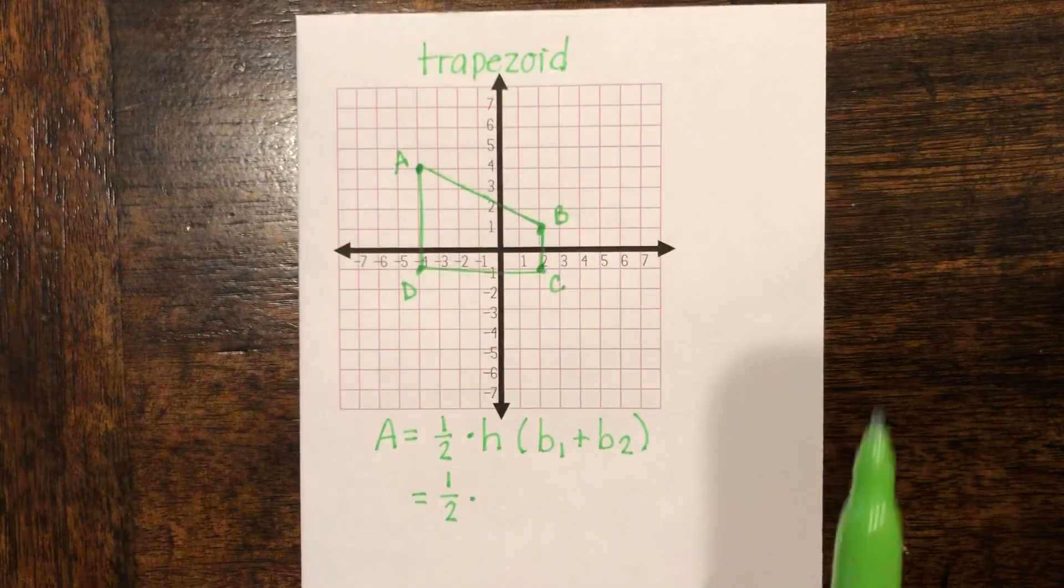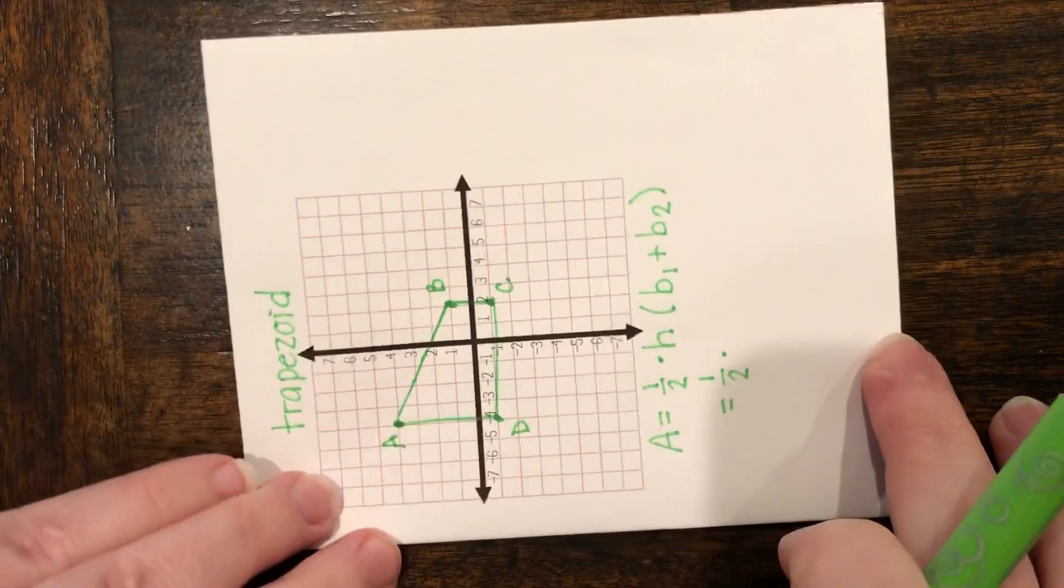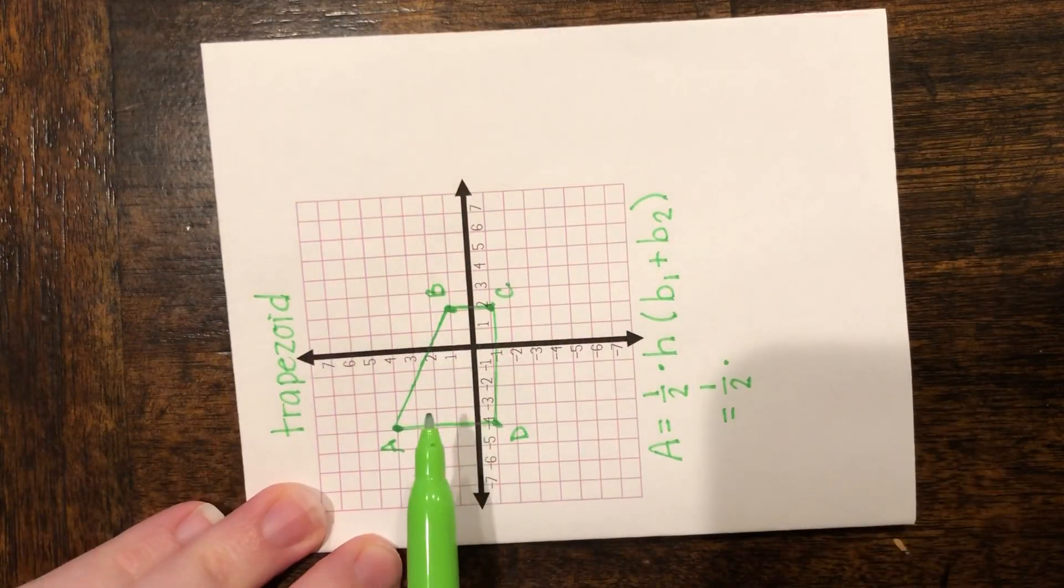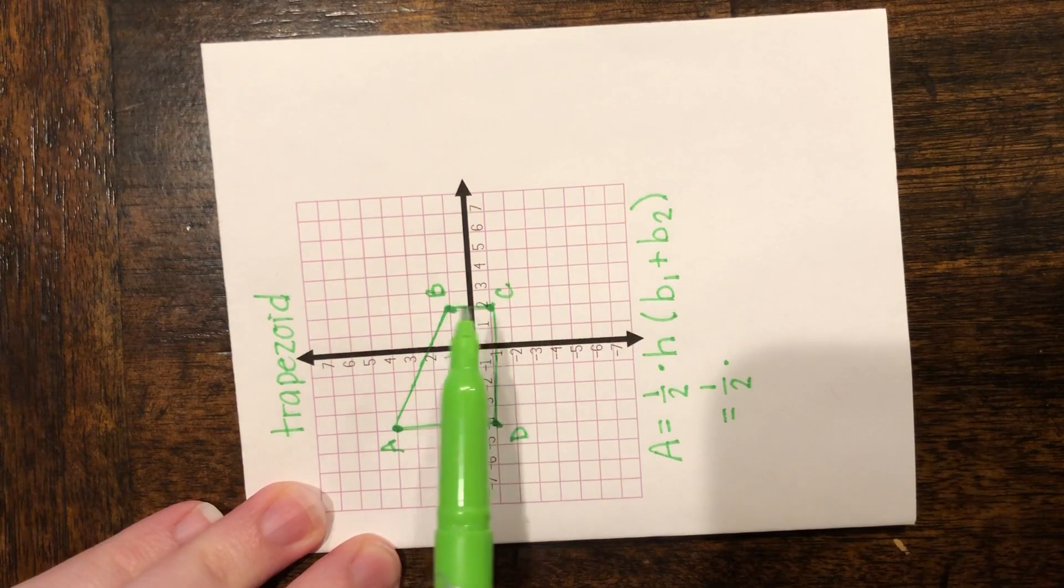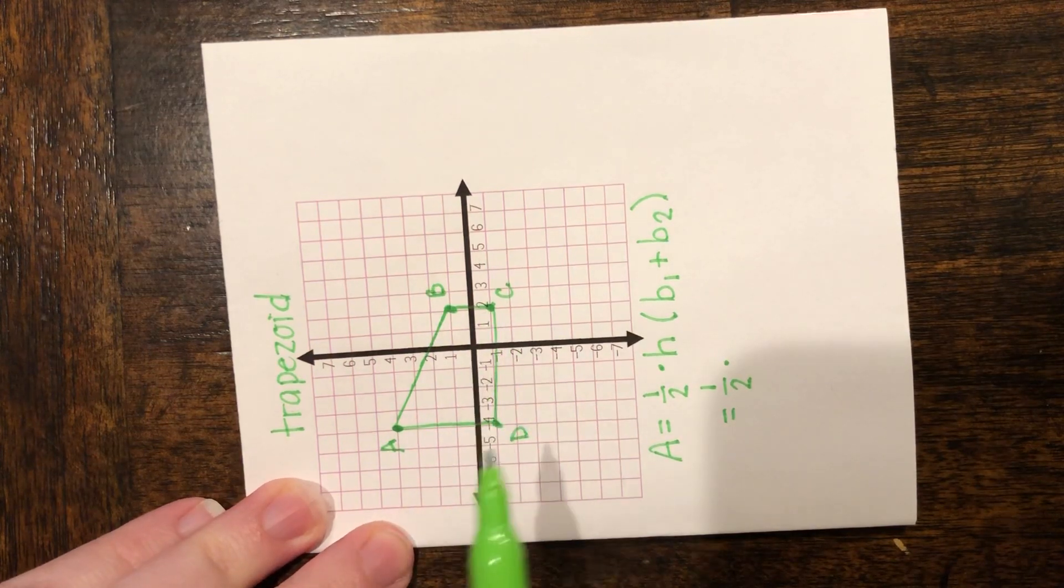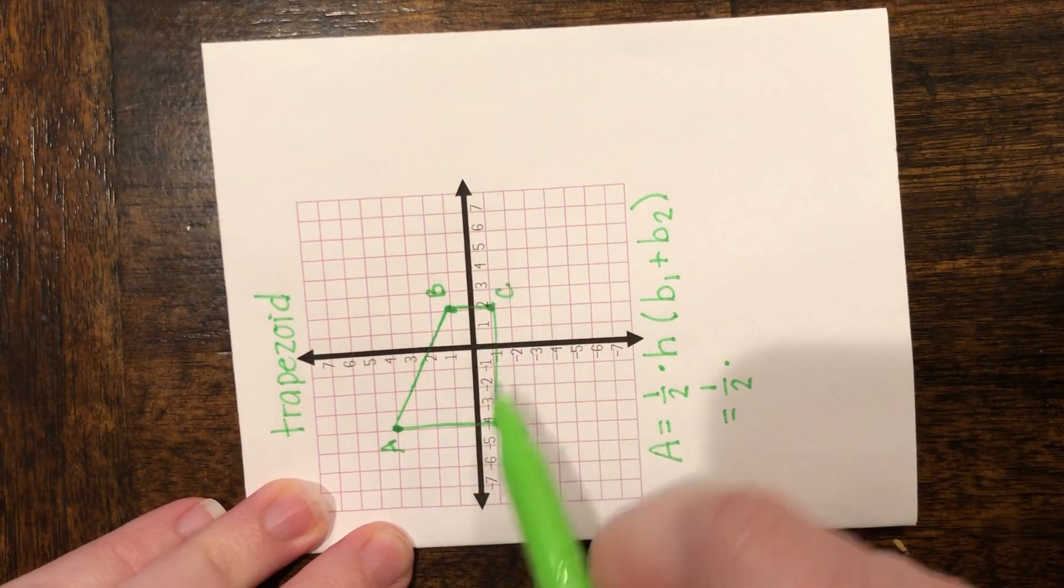Now here's a little trick. If you're having a really hard time with that, just turn your coordinate plane. And now it looks more like the problems that we've done so far where we have our bases on the bottom and the top. So now that we know that the height is from base to base, let's go ahead and count how many units it is from base to base.